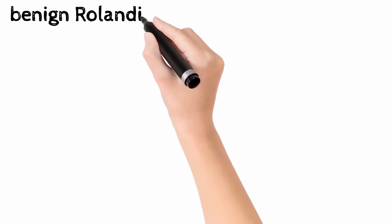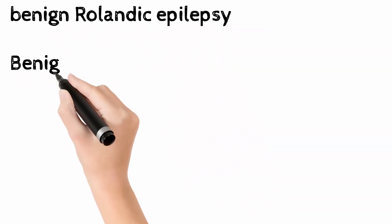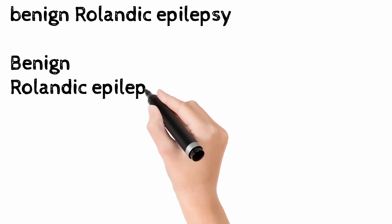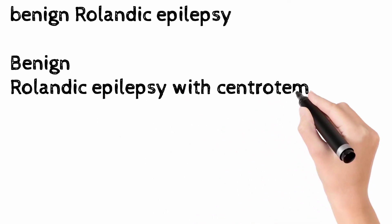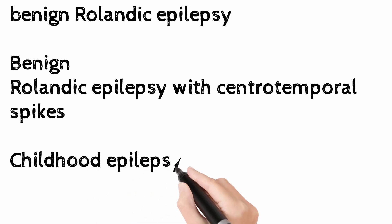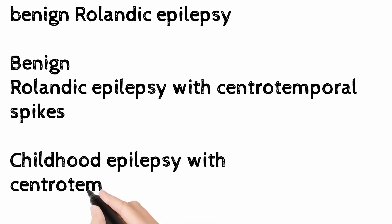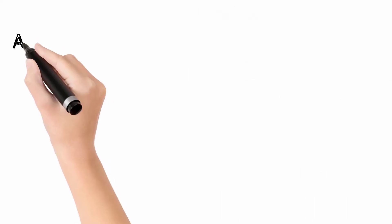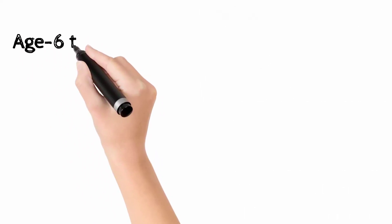Good morning friends. Today let's learn about benign Rolandic epilepsy. Another name for this condition is benign Rolandic epilepsy with centrotemporal spikes, and the current name is childhood epilepsy with centrotemporal spikes.